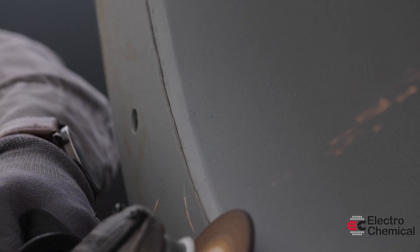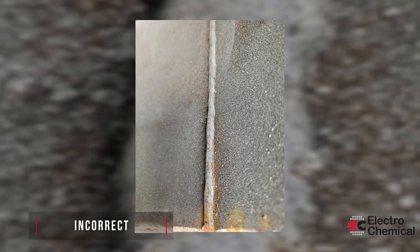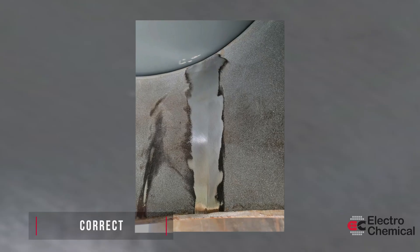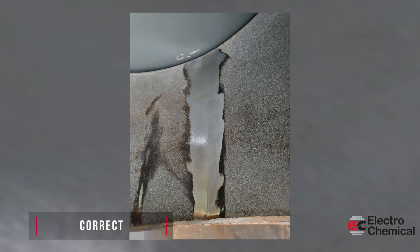All welded joints and seams that will be lined shall be ground flush with adjacent metal and shall be smooth, solid, and continuous, free of holes, porosity, lumps, high spots, sharp edges, undercutting, and pockets.